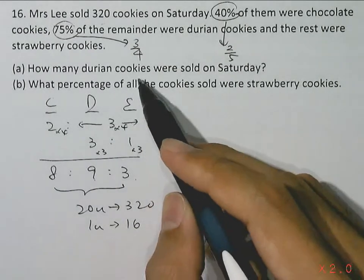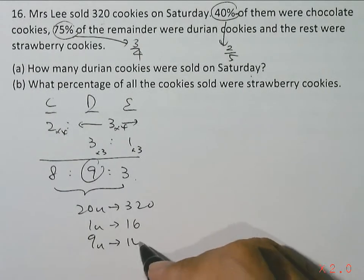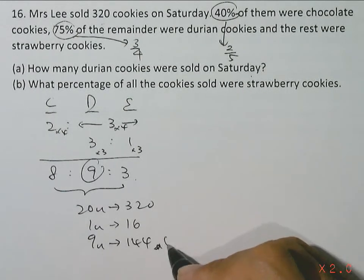How many durian cookies were sold on Saturday? We have 9 units over here. So 16 times 9 gives us 144 for part A.